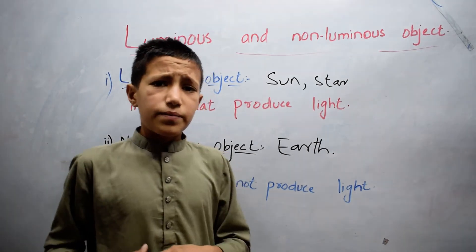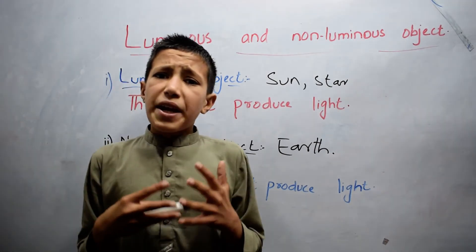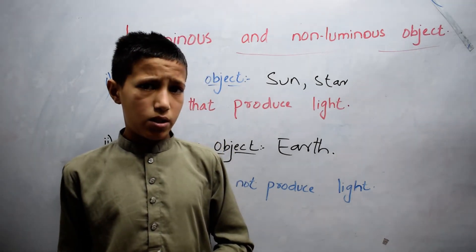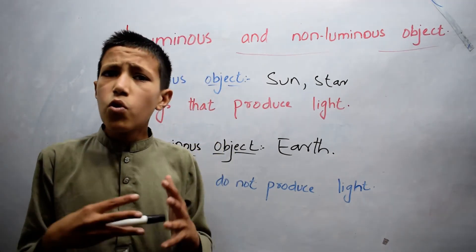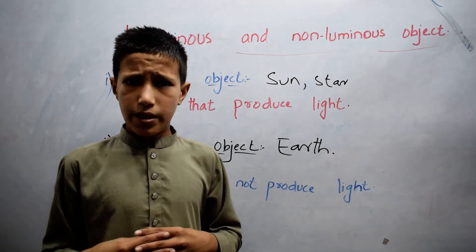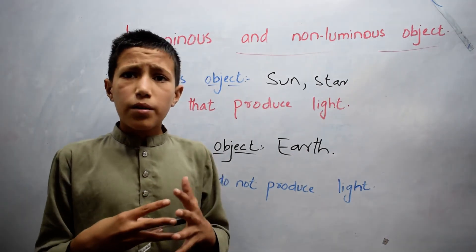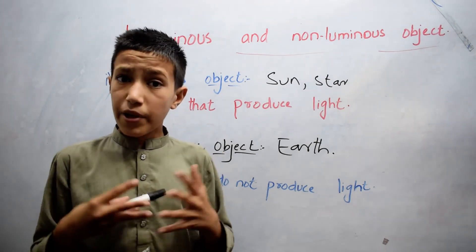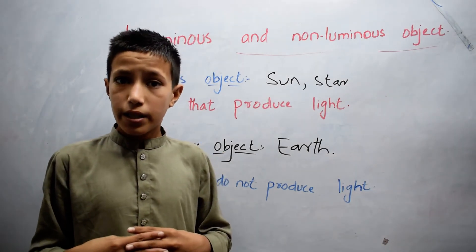So students, is the moon a luminous object or a non-luminous object? The moon is non-luminous because it takes light from the sun and becomes shiny and bright at night.